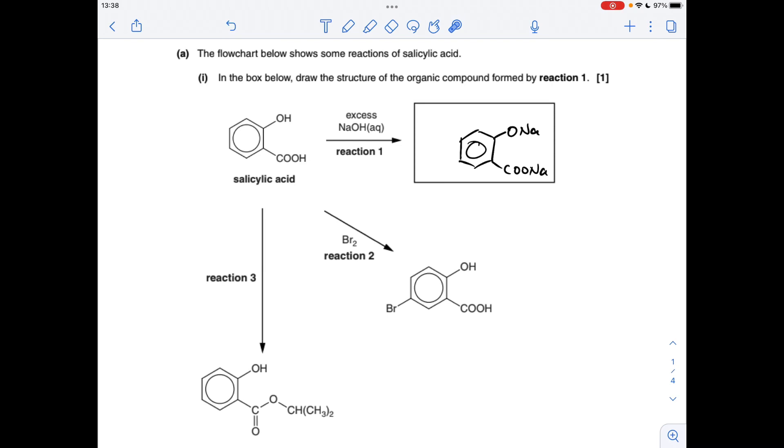The organic compound formed by reaction one uses excess sodium hydroxide because sodium hydroxide can react with the hydroxyl group here and the carboxyl group as well. So we're going to get the salt formed at each point, so we get ONA and COONA.